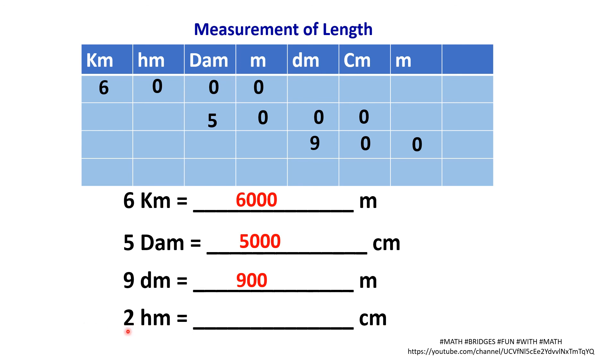Now, 2 hectometers is how many centimeters? Hectometer is here. So you write 2 here. We are converting it into centimeters. Here, 0. So in between also zeros you take. Therefore, 2 hectometers is how much? 20,000 centimeters. Don't you think it is damn easy, the conversion? Just the thing is you have to remember this mnemonic.